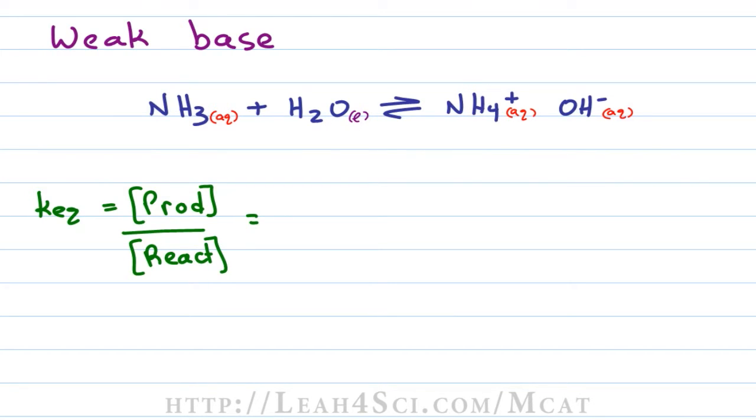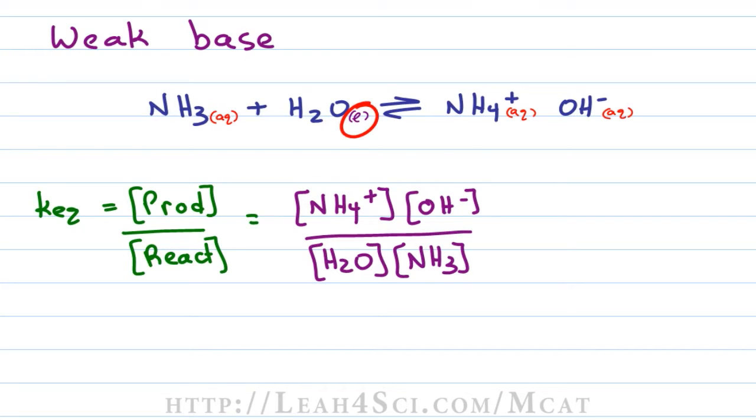You put the concentration of the products divided by the concentration of reactants. For this reaction, the products are ammonium and hydroxide and the reactants are ammonia and water. But don't forget, for a KEQ expression, you can only have concentrations. Water is a liquid and we don't include liquids or solids in a KEQ expression.